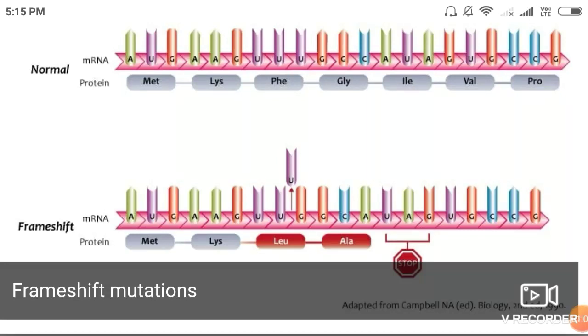As you can see in the first diagram, normal protein sequence is formed. First, the mRNA produces the amino acid methionine, the initiator codon. Next, AAG codes for lysine, UUU for phenylalanine, GGC for glycine, then AUA for isoleucine, GUG for valine, and CCG for proline.